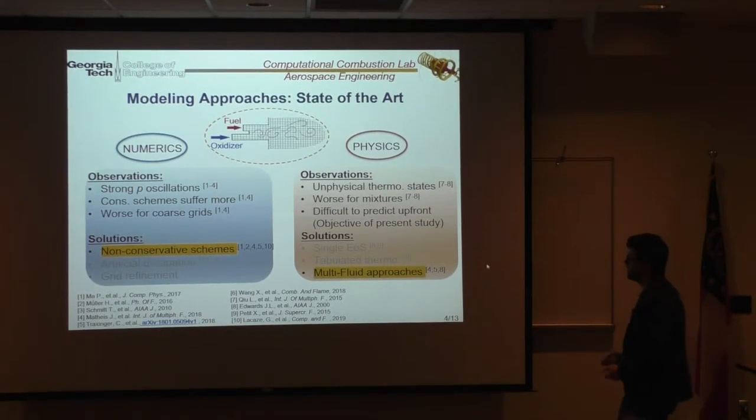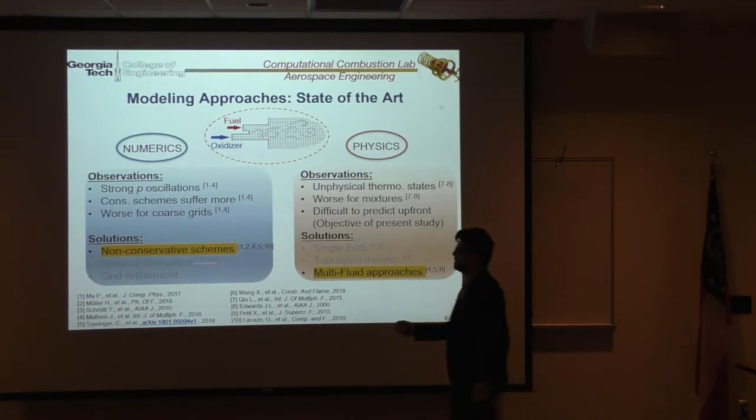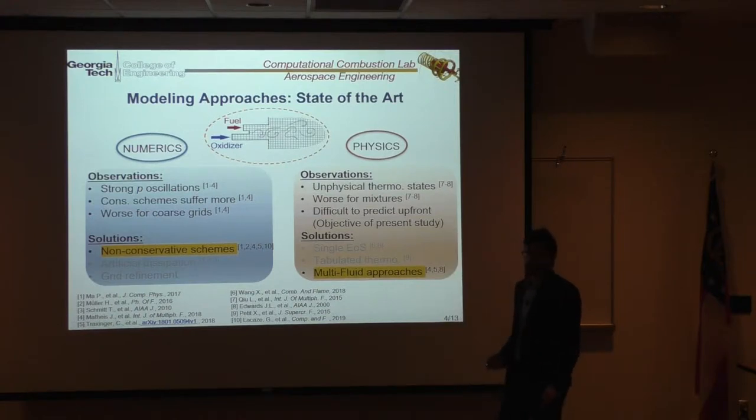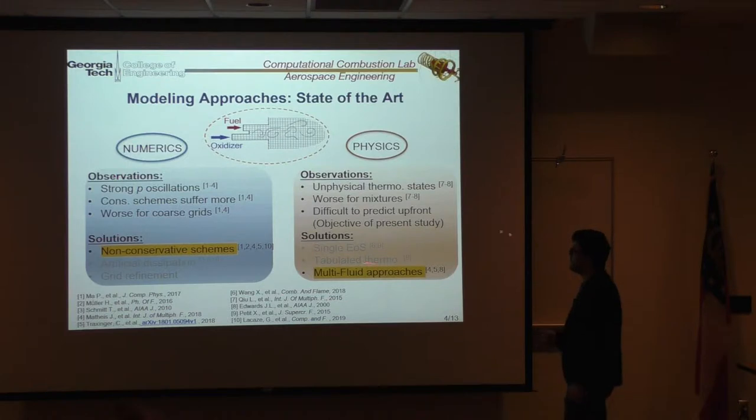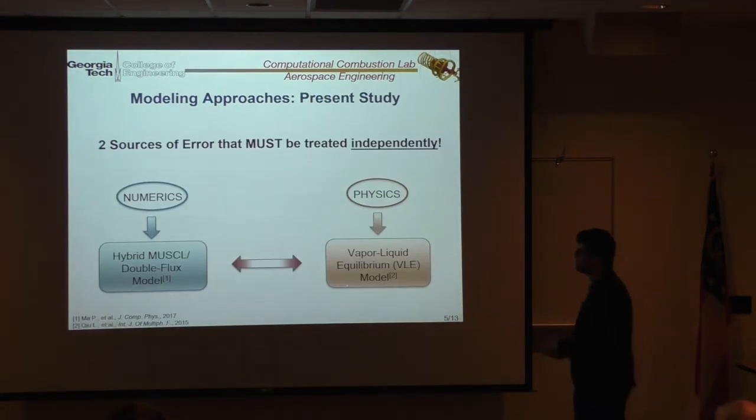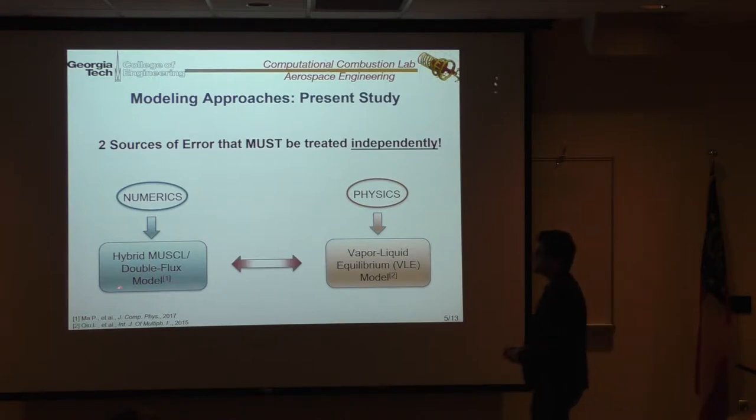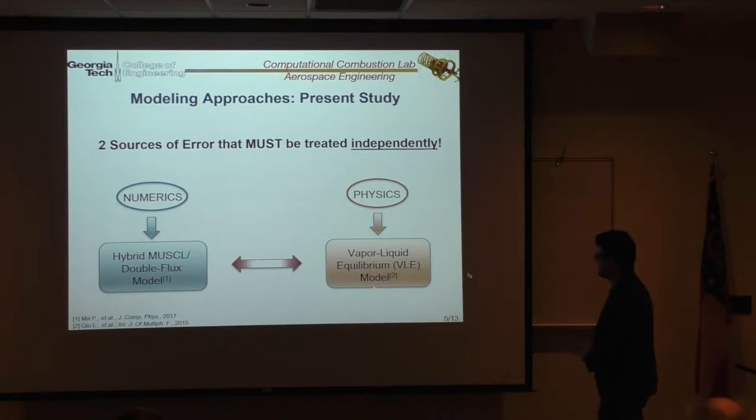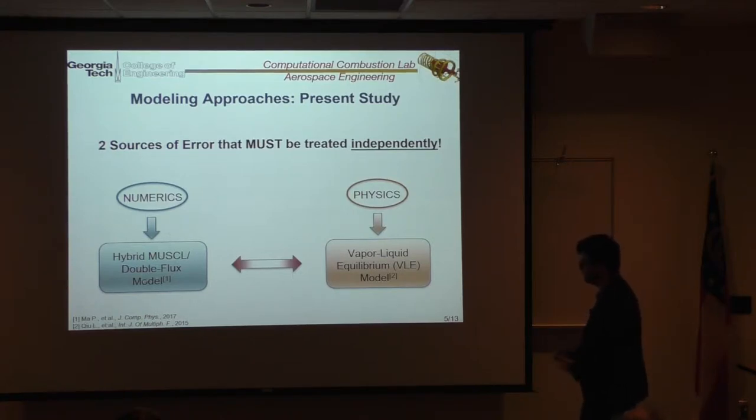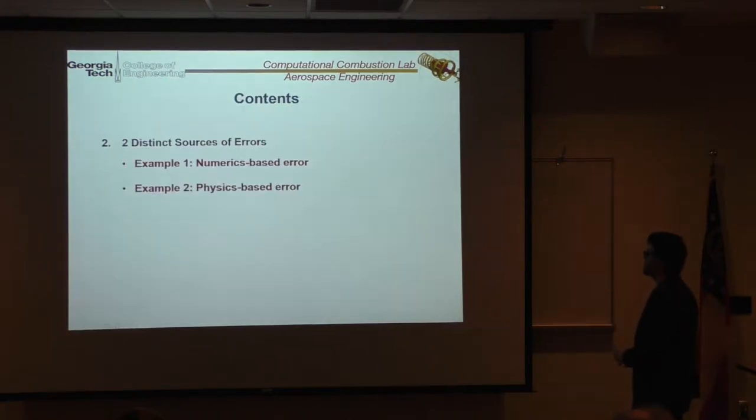And in my research, I chose to use this solution, try to give up some non-conservation issues to solve the problem of numerics, and then use what other people call multi-fluid approach in the literature. So again, just to emphasize, there are two different types of issues. They have to be treated differently. Solving one doesn't solve the other one, unfortunately. For the numeric side, I extended a modification of the MUSCL scheme, which is called double flux, with our conventional solver that we had already, and then coupled with the vapor-liquid equilibrium thermodynamics, which solves the physics-related issues.